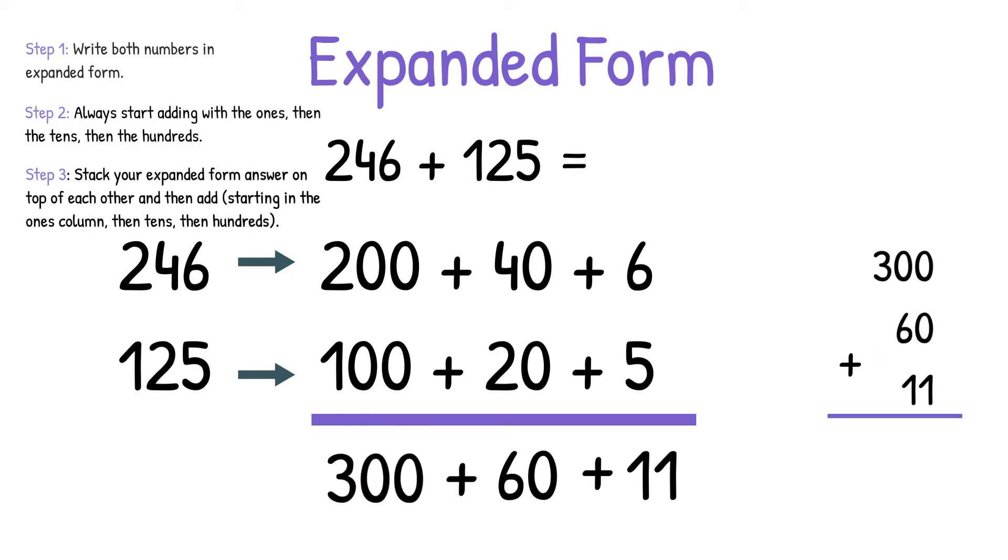Step 3 is stack your expanded form answer on top of each other, and then add, starting in the ones column, then tens, then hundreds. 0 plus 0 plus 1 equals 1, 0 plus 6 plus 1 equals 7, and 3 plus nothing equals 3. So once again we get the answer 371. We used two different strategies and still got the same answer.